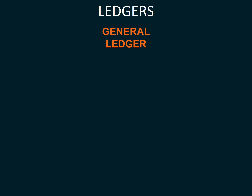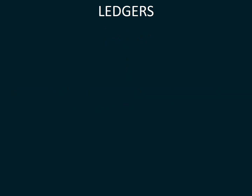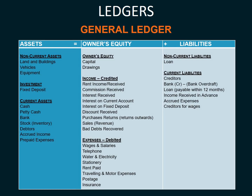The general ledger includes the owner's equity, the liabilities, the assets, the income, expenses, and final accounts. So our general ledger will comprise of our assets, our owner's equity, and our liabilities.